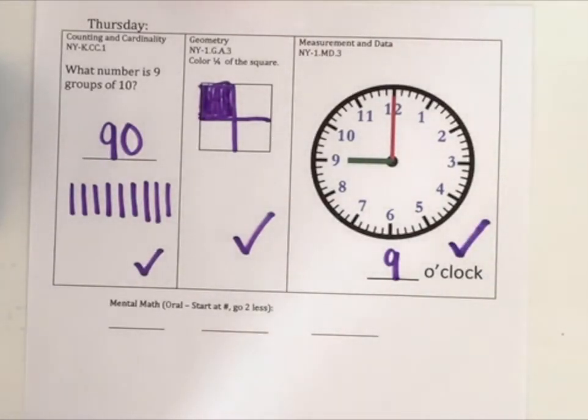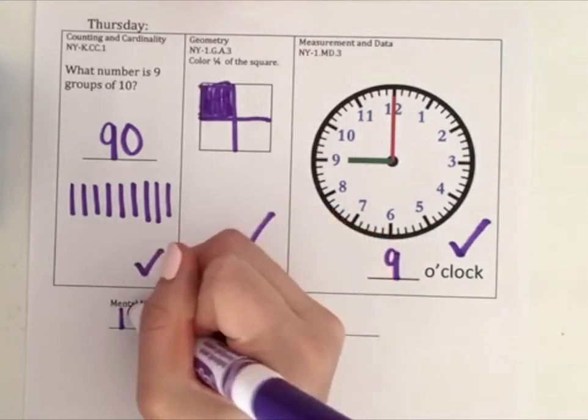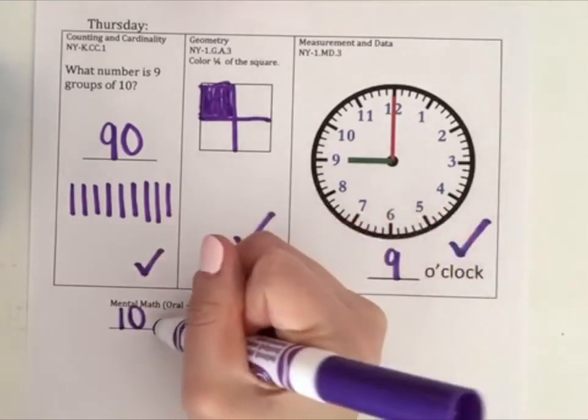For the mental math now, I'm going to give you a number to start, and we're going to go two less. Two less means the number gets smaller. If I start at twelve, what number is two less than twelve? Right, ten is two less than twelve. Give yourself a check.